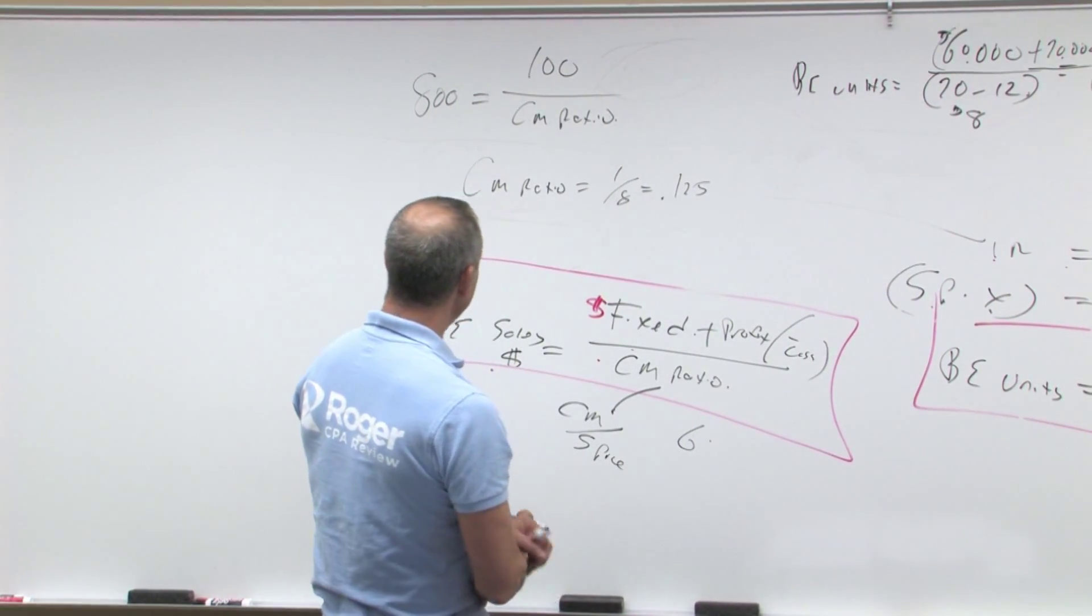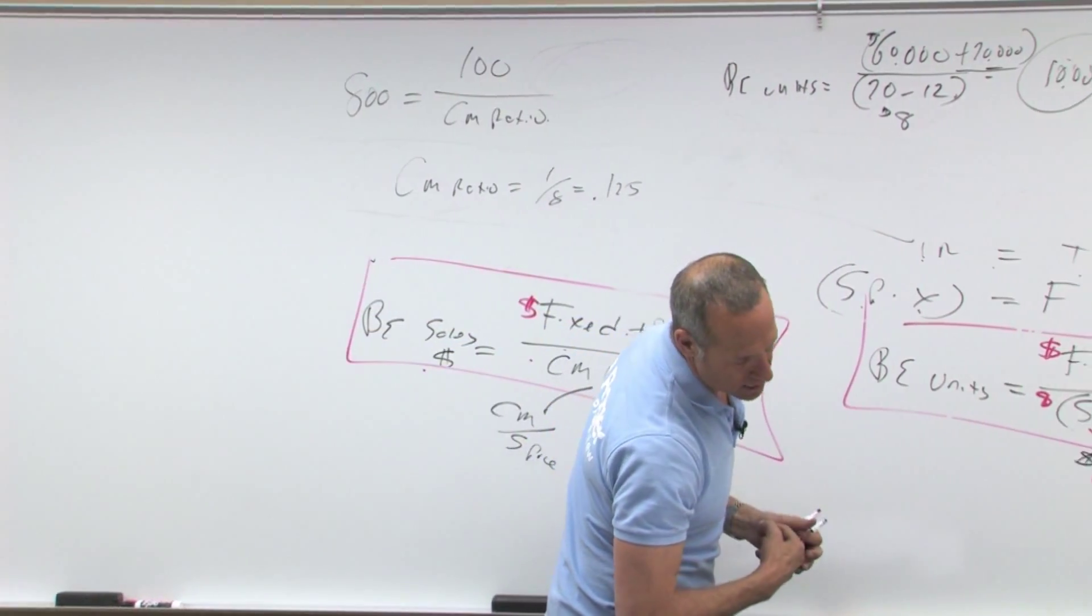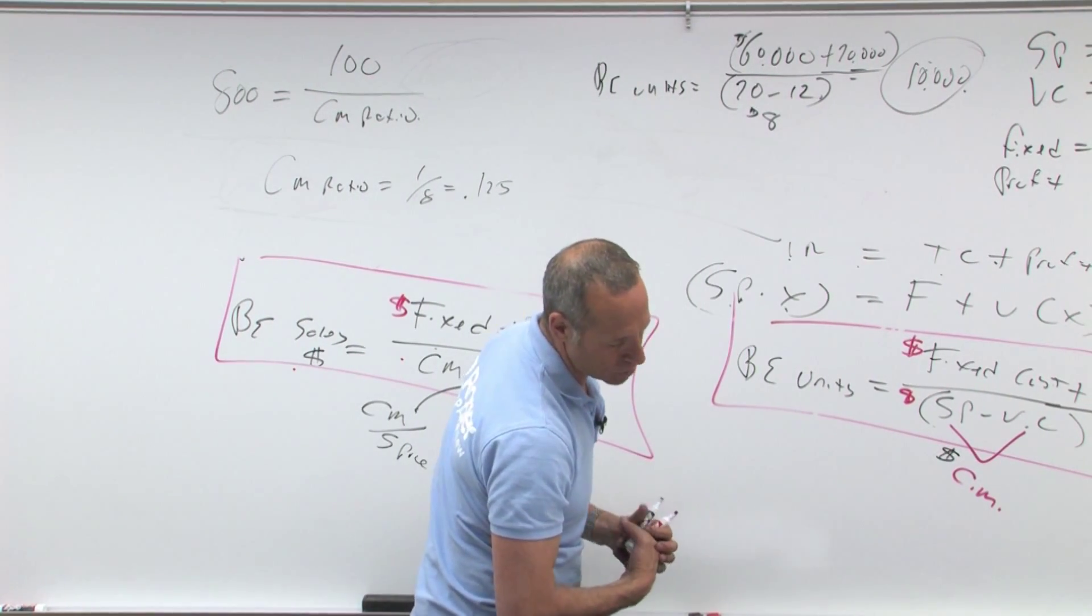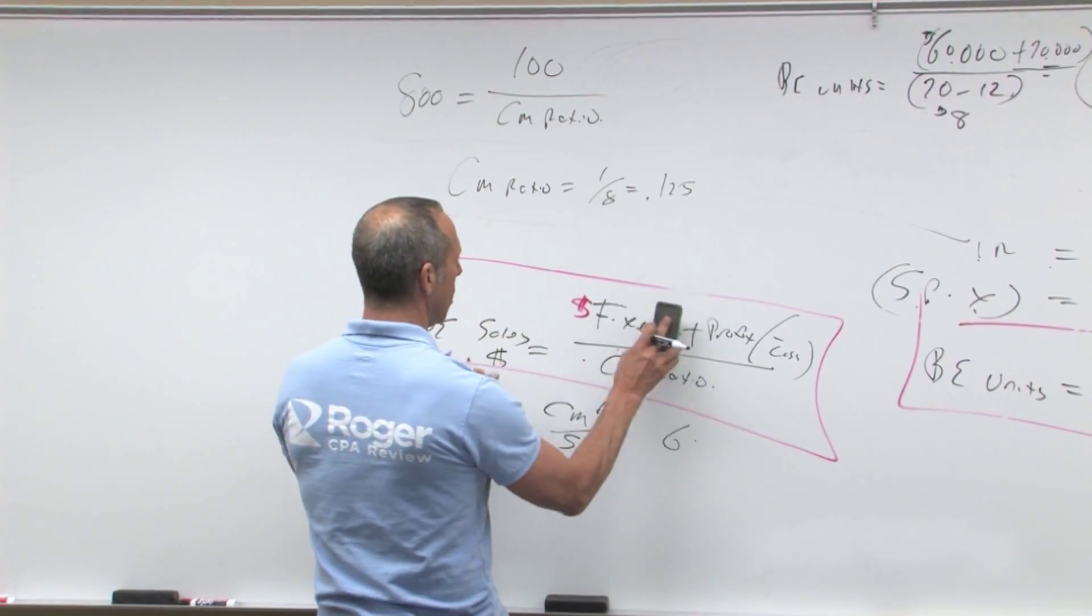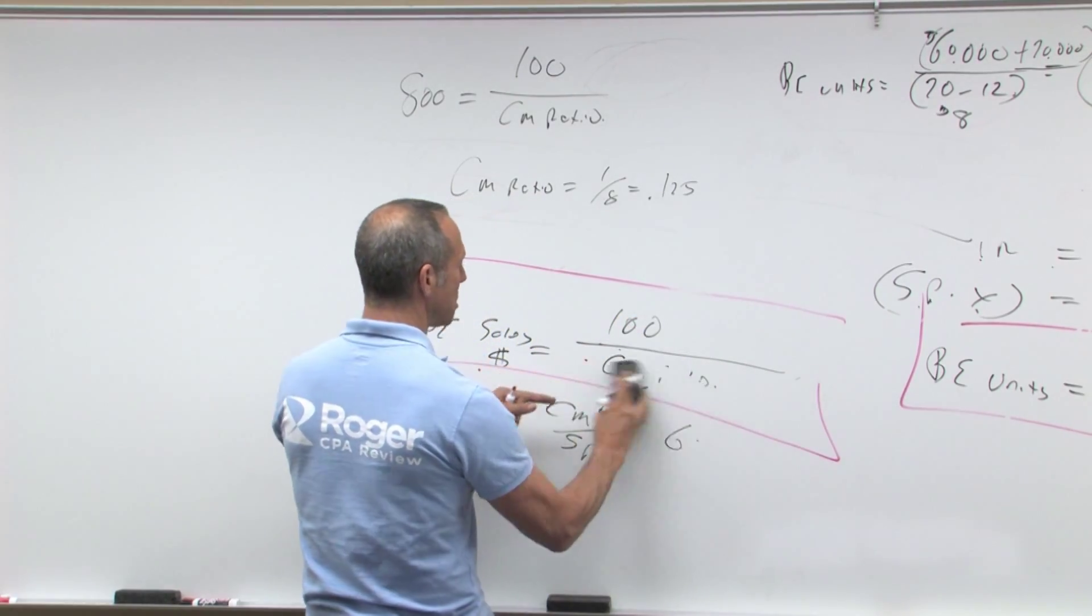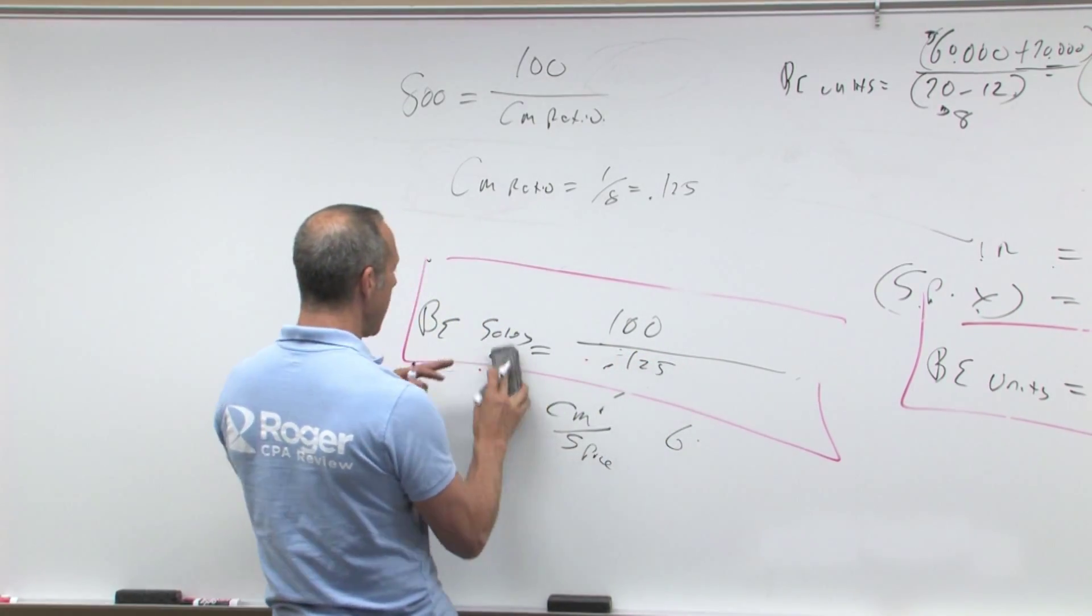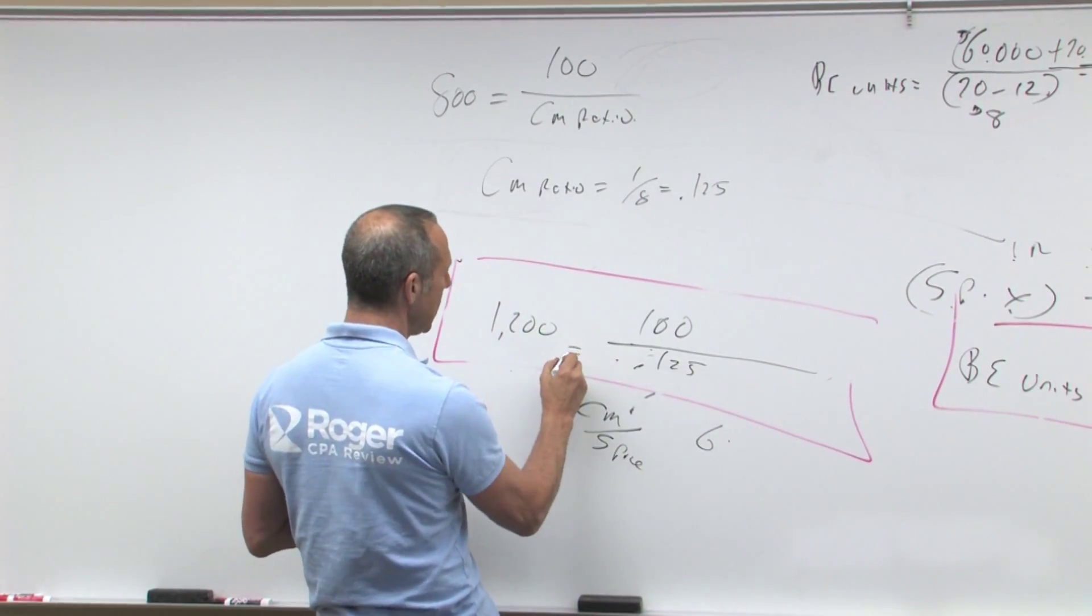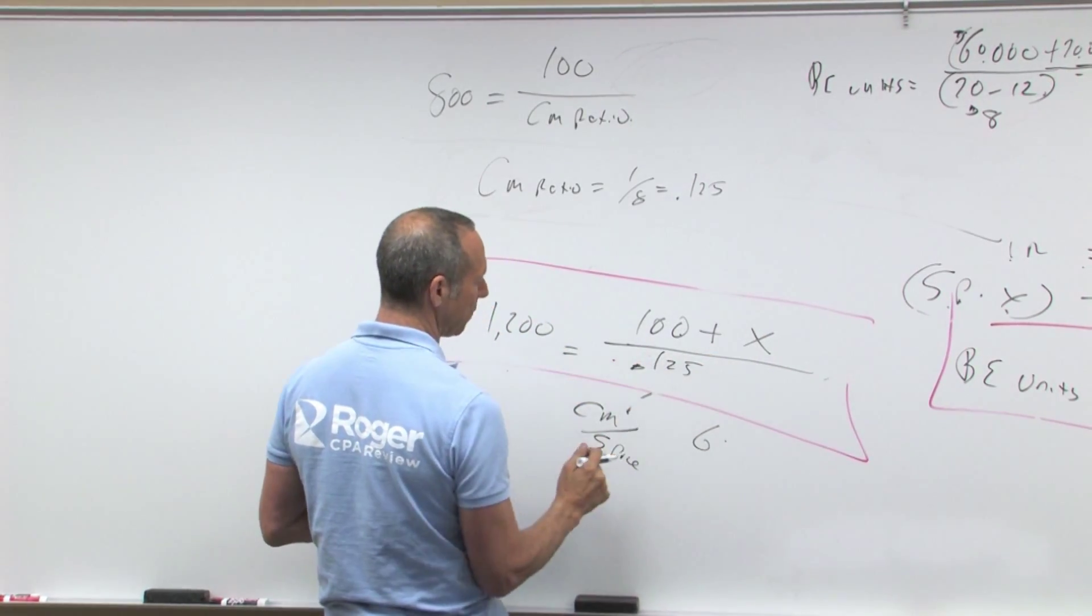So now, if we were to say breakeven in sales, but we want to have a profit, and what it says is what is the profit at a million two in sales, a million two in sales. All right, well, we know that we have fixed costs of 100, so let's set this up. We're going to have fixed costs of 100. We have a CM ratio that we just figured out is 0.125, and we know that breakeven in sales dollars, well, it's not breakeven, it's going to be at a million two equals 100 plus X profit over 0.125.